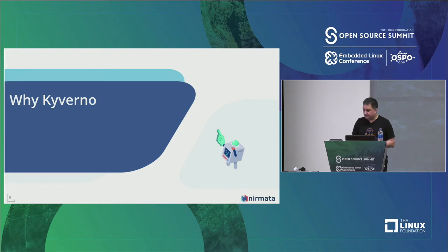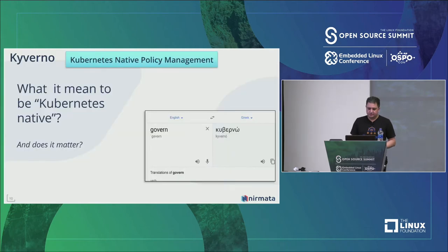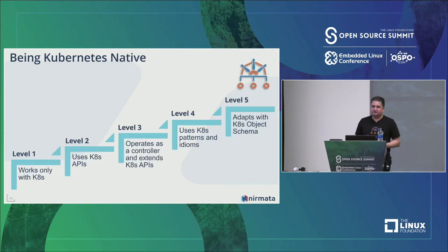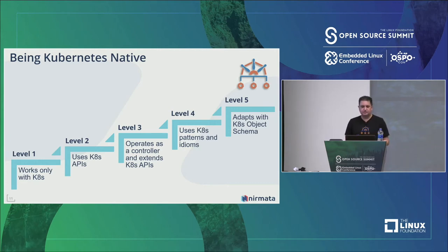Let's talk about why Kyverno and what the motivation for this project was. Kyverno uses the tagline 'Kubernetes native policy management.' There are several levels of being Kubernetes native. The first level is just being focused on Kubernetes as a domain. The next level is actually interacting with Kubernetes APIs. Another level up is operating your solution as an operator in Kubernetes, extending APIs using custom resources and CRDs.